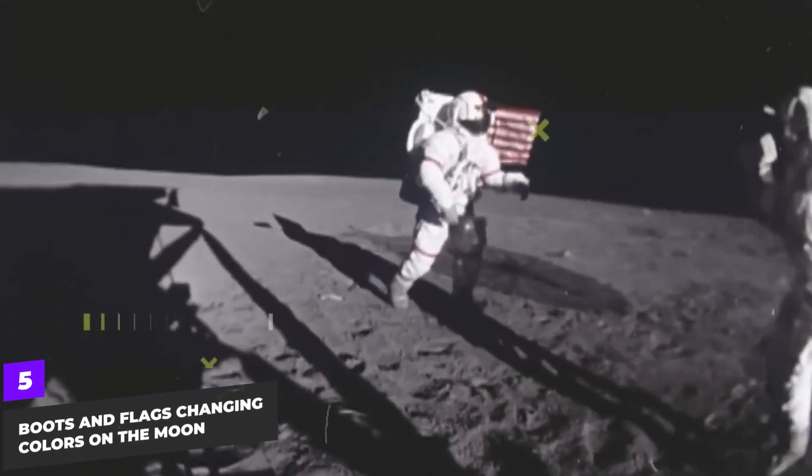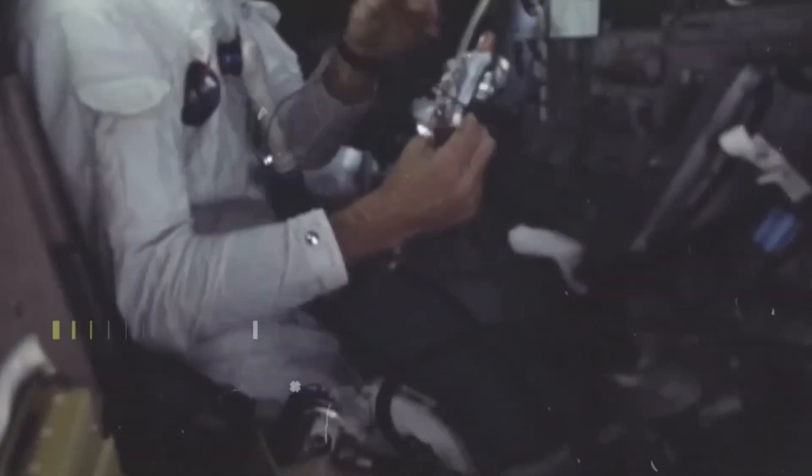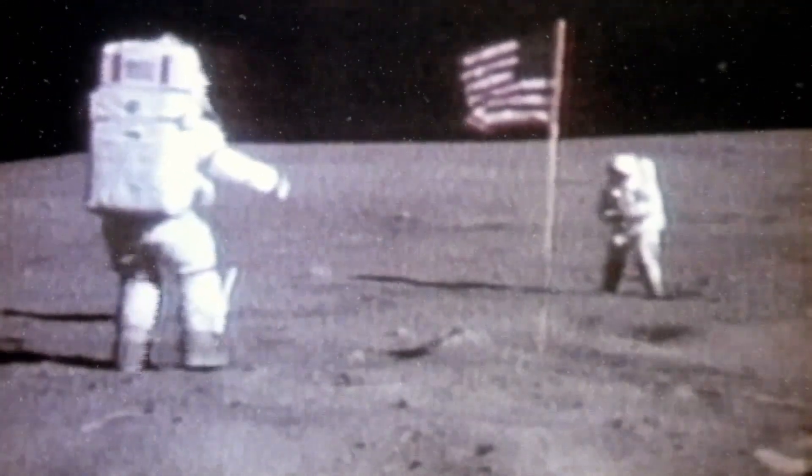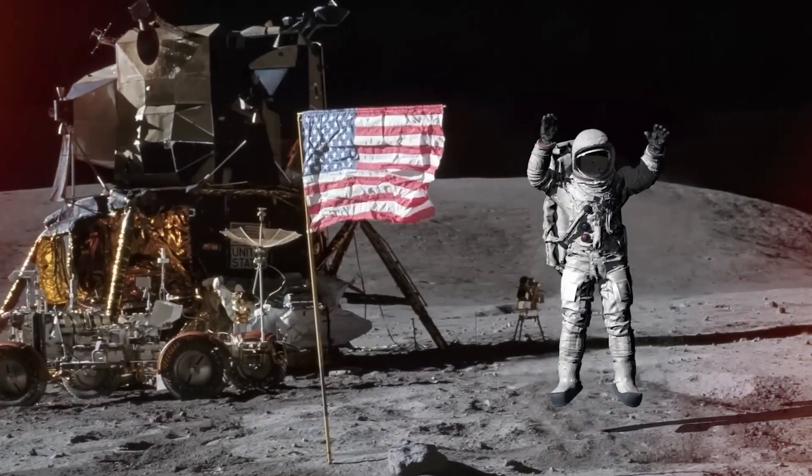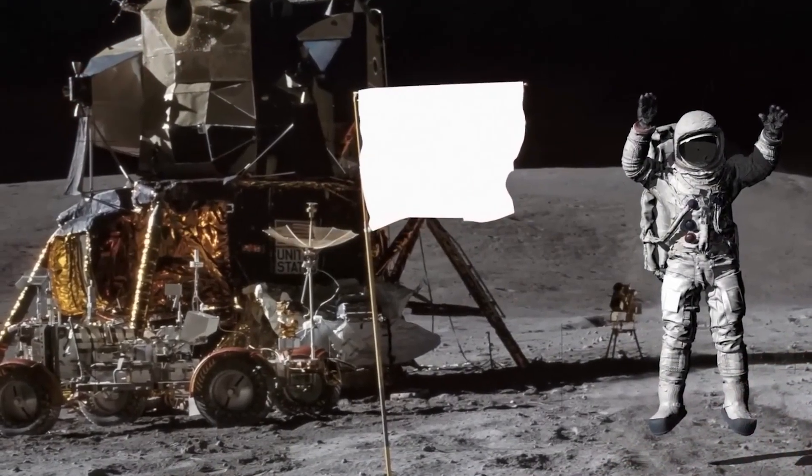Boots and flags changing colors on the Moon. The iconic boots and flags left on the Moon by Apollo astronauts are likely no longer their original colors. The intense radiation from the Sun has probably bleached them completely white, showcasing the harsh environment of space.